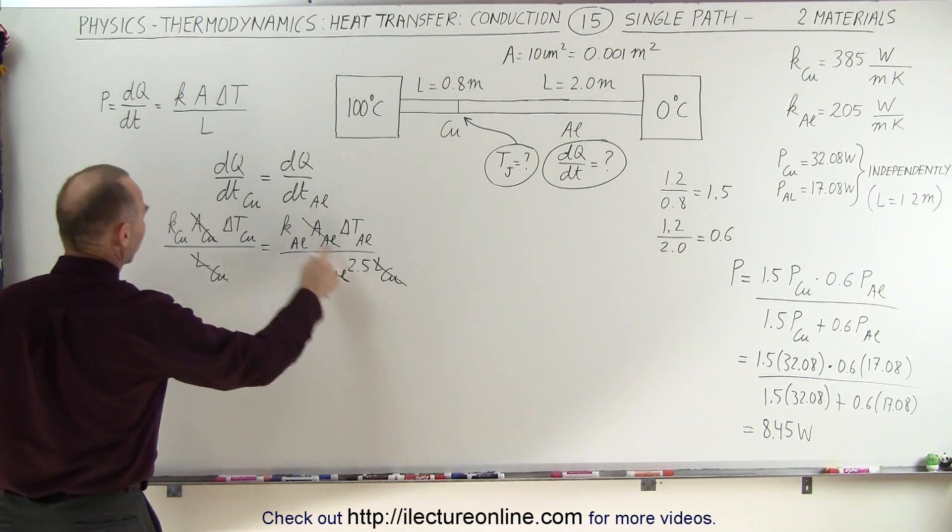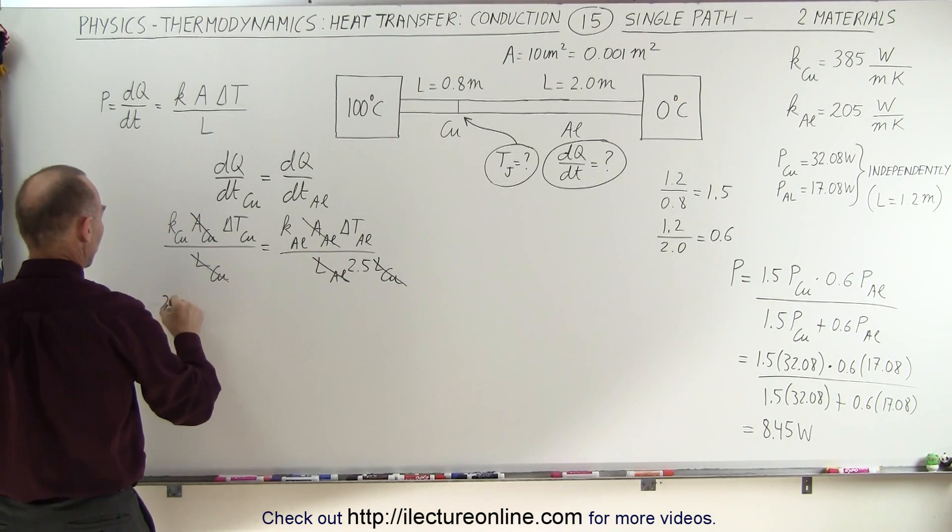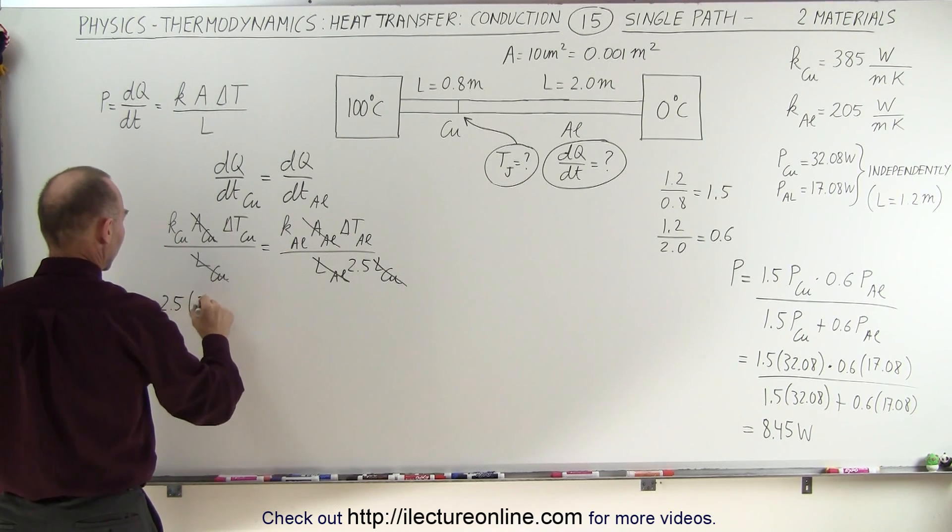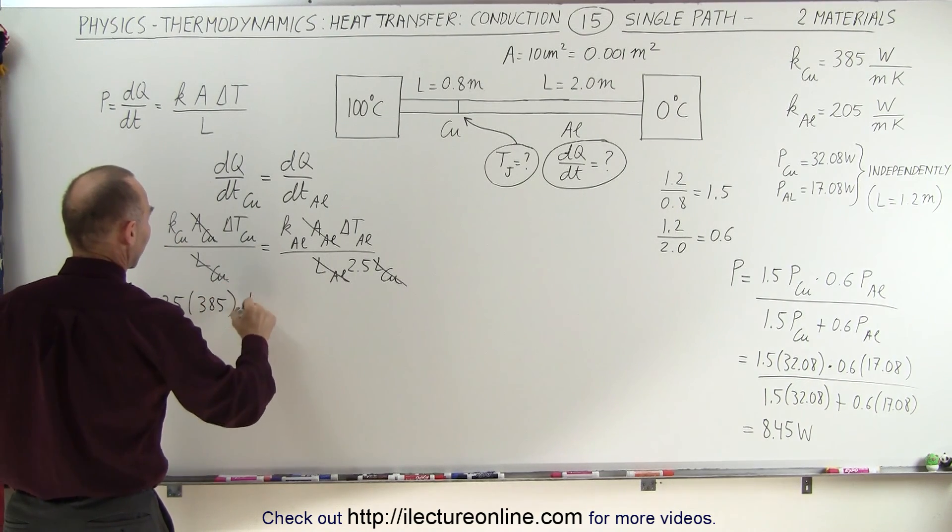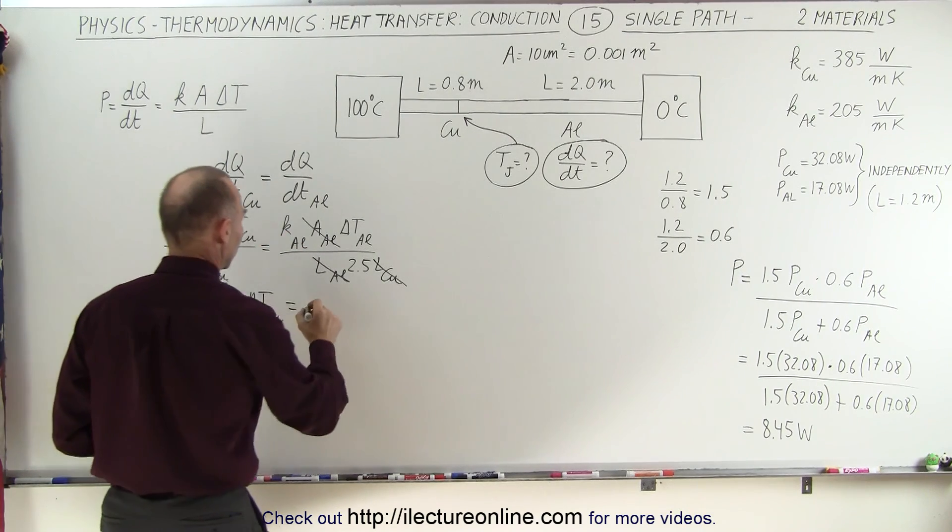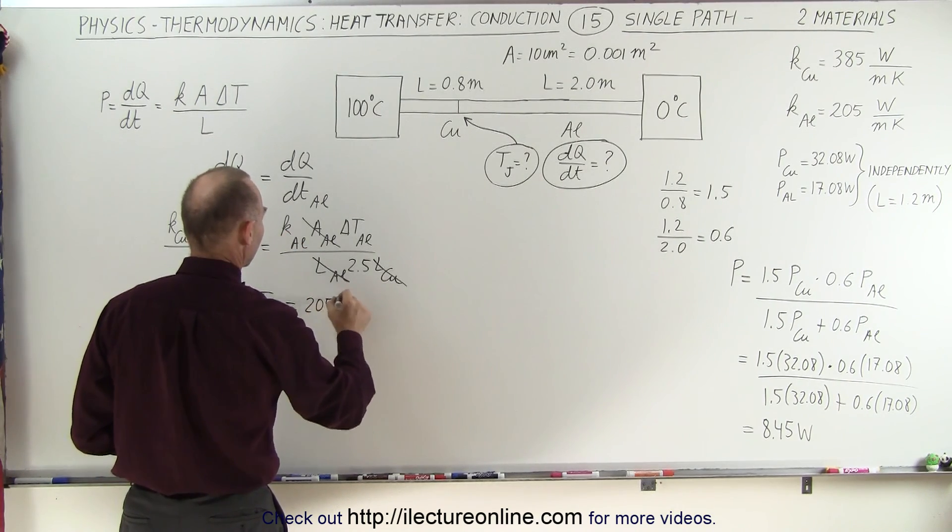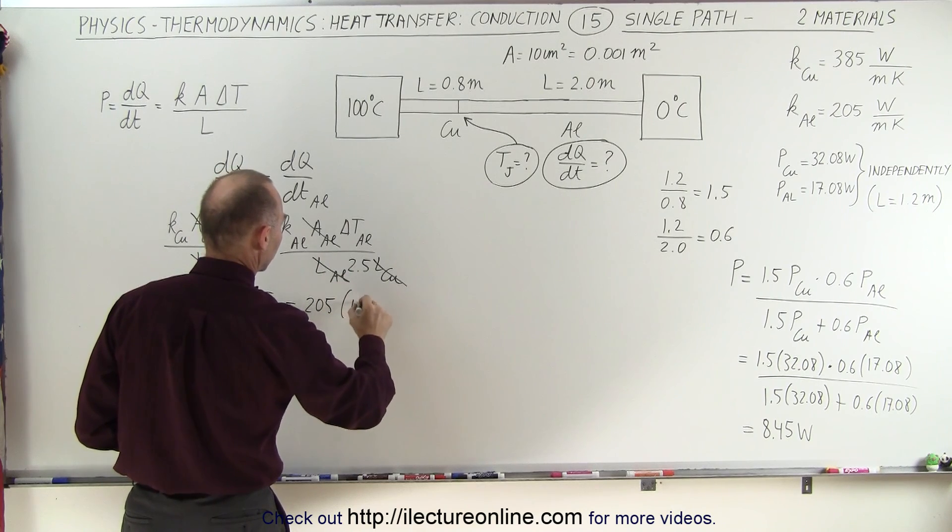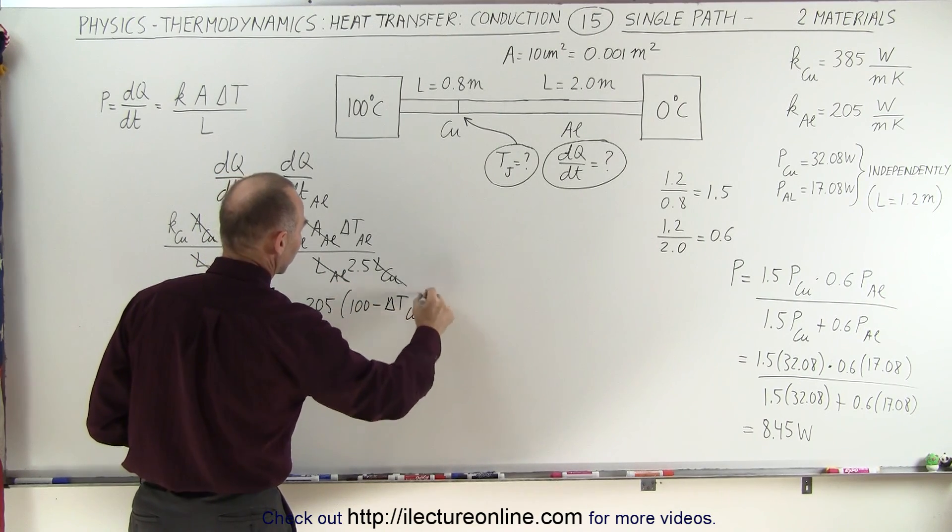We can cross-multiply here, so we end up with 2.5 times 385, which is a constant for copper, times the delta T of the copper is equal to aluminum. That would be 205 times 100 minus the delta T of the copper.